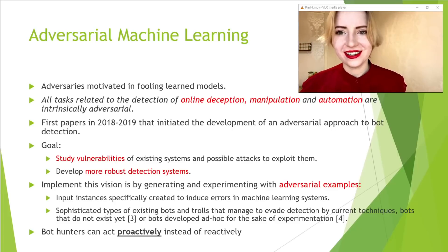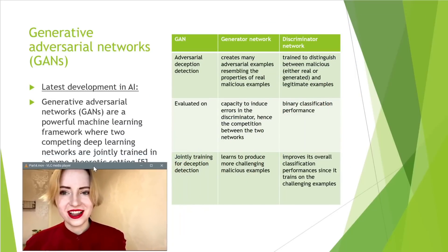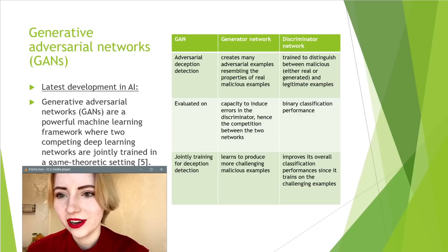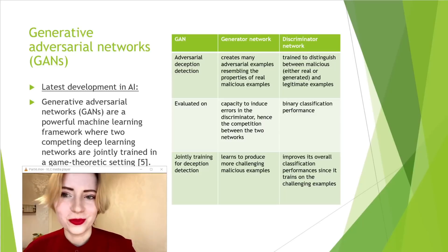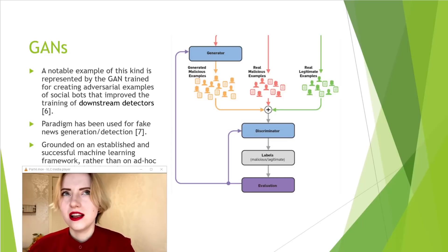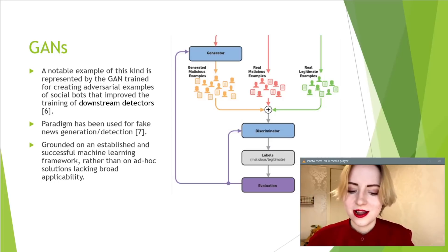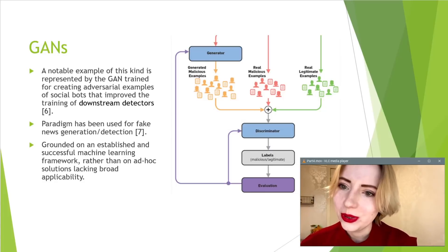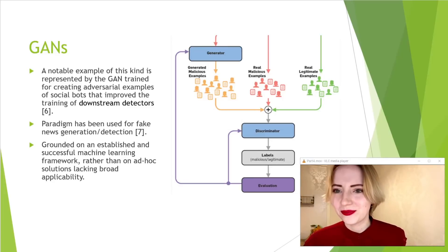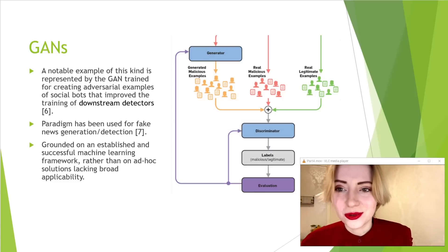These adversarial networks are further improved by the latest development in AI: the generative adversarial network (GAN). The generator network creates many adversarial examples, while the discriminator network differentiates between malicious and legitimate examples. GANs have not yet been used for social bot detection, but the article presents compelling points for how and why they should be used, based on their success in differentiating fake news, and their potential for more general application to bots.